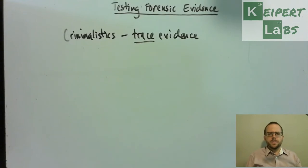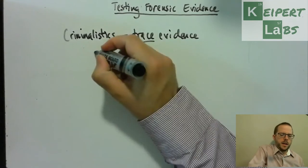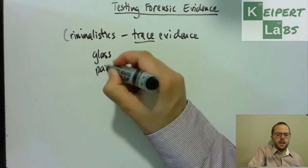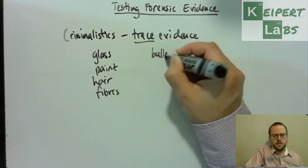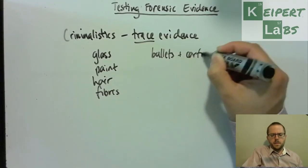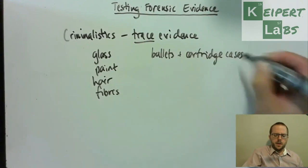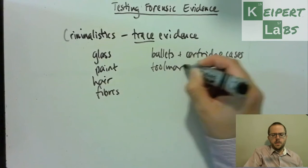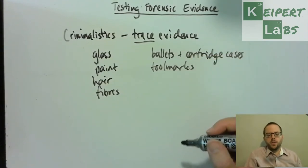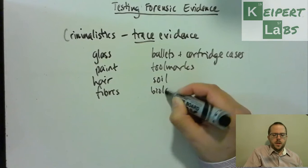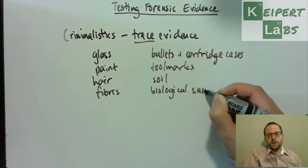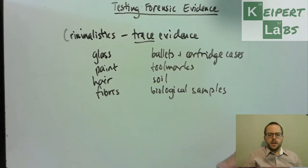Part of the forensic scientist's job is to locate, identify, and test trace evidence. Some of the different items we might come across include things like glass and paint, hairs and fibres, bullets and cartridge cases — thinking about ballistics — tool marks, maybe in a break and enter where there's been marks from a crowbar that's jemmied a window open, soil, biological samples, and lots of other different things that a criminalist might need to examine.